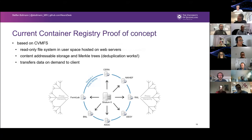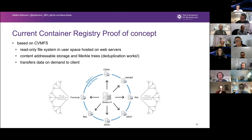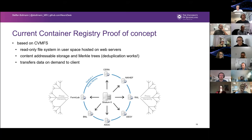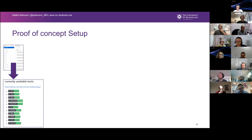This is a proof of concept I worked on with the ARCOS group — how could we build a container registry that does everything we need. We looked at what CERN does: they use CVMFS, the CERN Virtual Machine File System, which is a read-only file system in user space hosted on web servers. It uses content-addressable storage and Merkle trees, so every file gets committed like a Git repo — meaning deduplication actually works. Data is transferred on demand to the client, so you can open the container directly on CVMFS storage and only pull what is needed via the web. There's a hierarchy of multiple servers and squid proxies to handle the load — CERN runs it at quite a large scale.